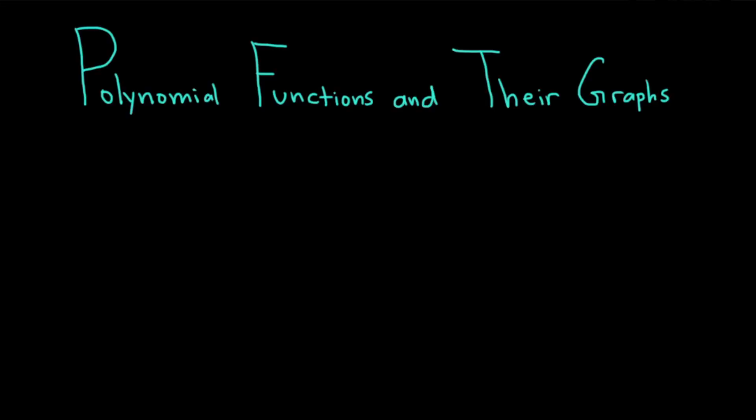Hi everyone, it's the Mathsorcerer here with Chegg. In this video, we're going to discuss polynomial functions and their graphs. Let's go ahead and do an example of sketching a polynomial function. The question is to sketch f of x equals x to the fourth plus 2x cubed minus 3x squared. Let's carefully work through it.